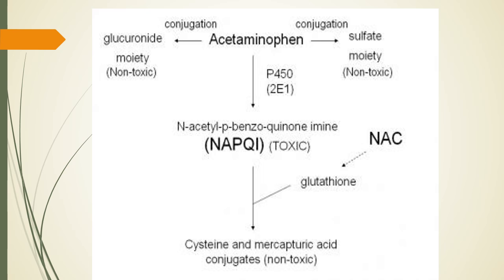The pathophysiology of PCM toxicity: acetaminophen produces a toxic metabolite known as NAPQI — N-acetyl-P-benzoquinone imine. When we ingest this drug, it reaches the liver where the enzyme glutathione — a good enzyme in our liver — detoxifies this toxic metabolite and converts it into cysteine and mercaptopuric acid, which are non-toxic substances.